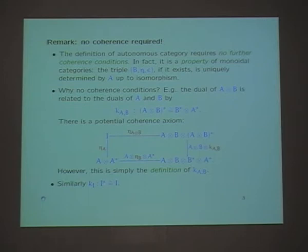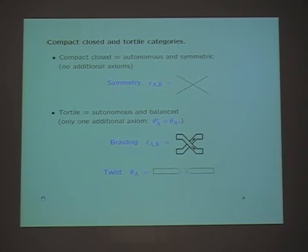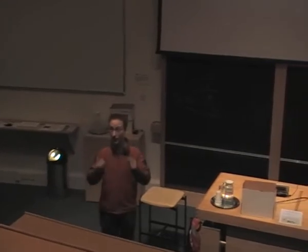People always talk about compact closed and dagger compact closed categories, and in terms of terminology it's eternally confusing. Sometimes people speak about non-symmetric compact categories, but these things have different names. Autonomous means just what I said: we do not assume symmetry. If we also assume symmetry, then it's called a compact closed category — that's exactly the same as autonomous and symmetric monoidal, two different properties of a monoidal category with no additional axioms. More generally, if your category has a braiding instead of a symmetry, and if it's also autonomous, then it's called a tortile category.